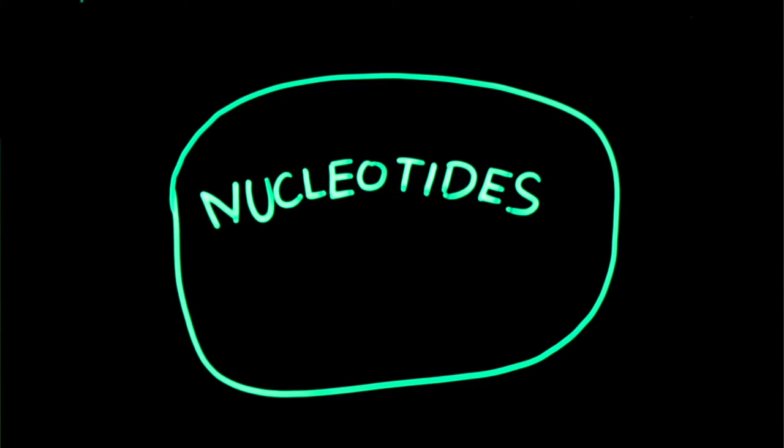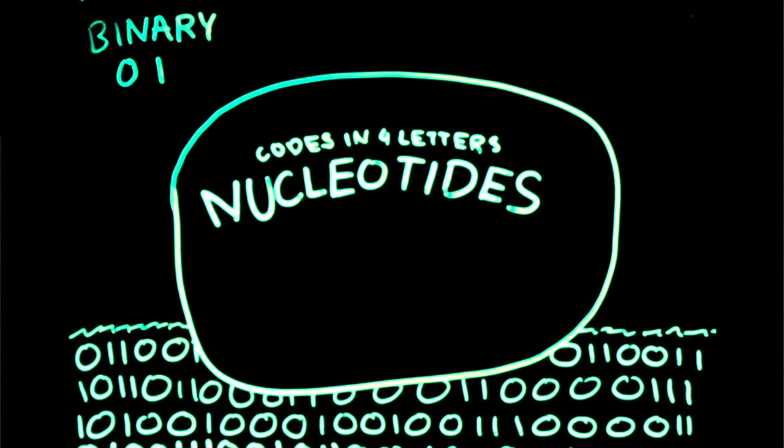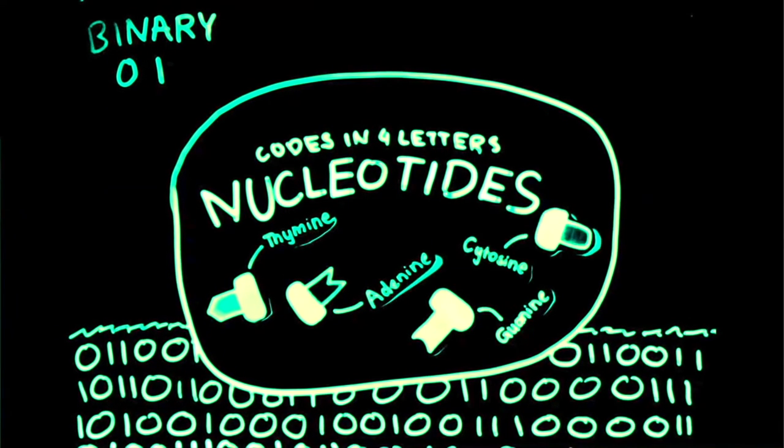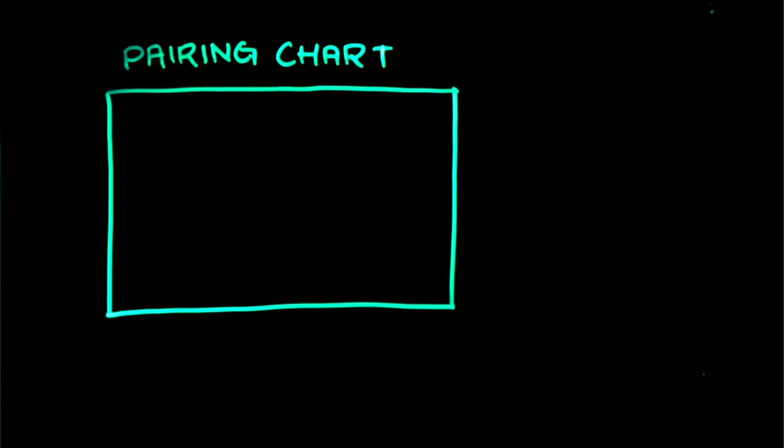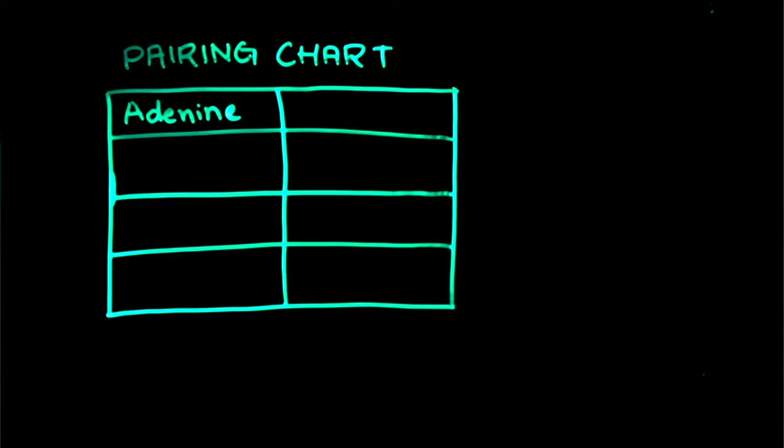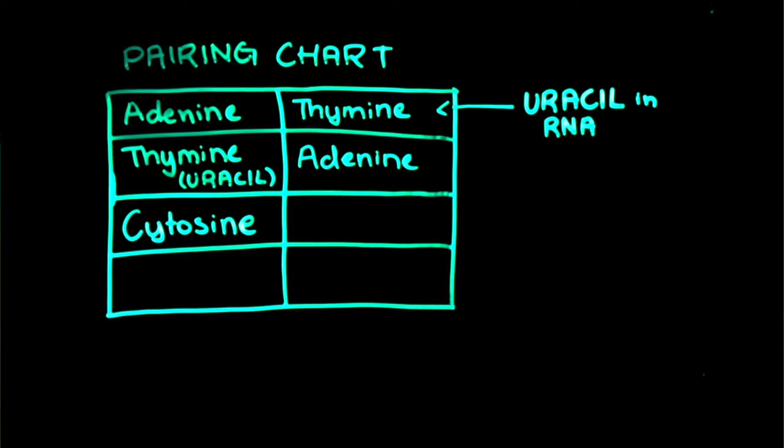Just like the computer language binary, which is a two-letter language, our DNA codes in four letters: thymine, adenine, guanine, and cytosine, and it uses it to code for our different traits. These are called nucleotides and they pair up like this. Adenine pairs up with thymine or uracil in RNA. Thymine or uracil in RNA pairs up with adenine. Cytosine pairs up with guanine and guanine pairs up with cytosine.